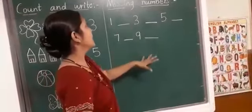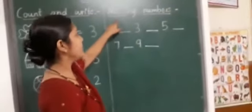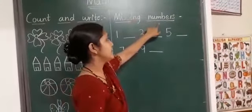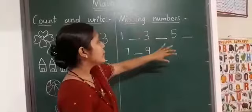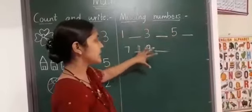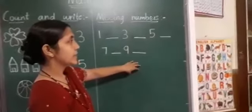Now next activity. Missing numbers. Children, few numbers are missing here. Isn't it? Isn't it? Yes.